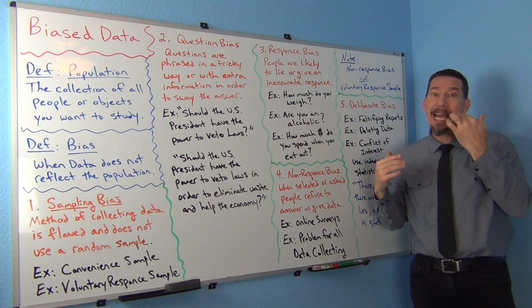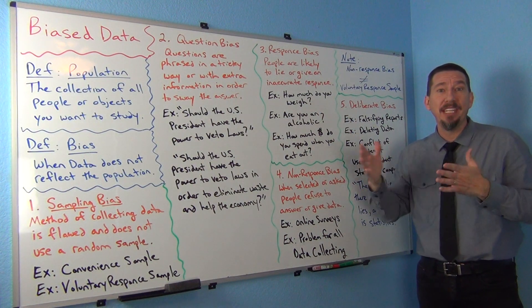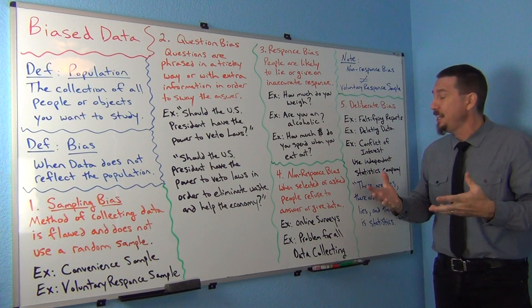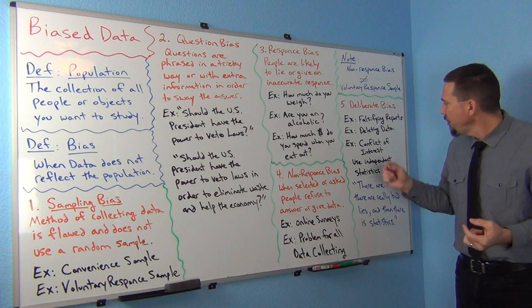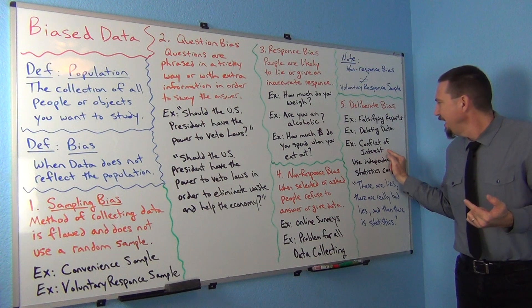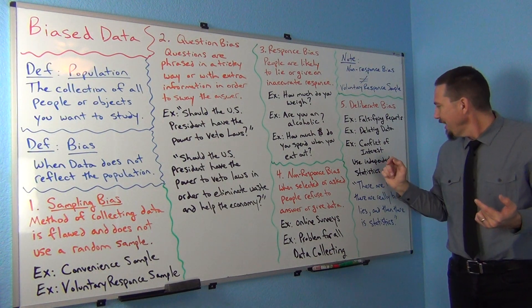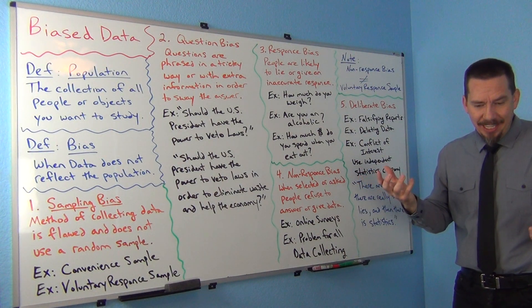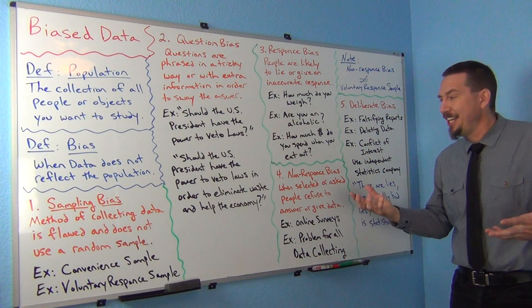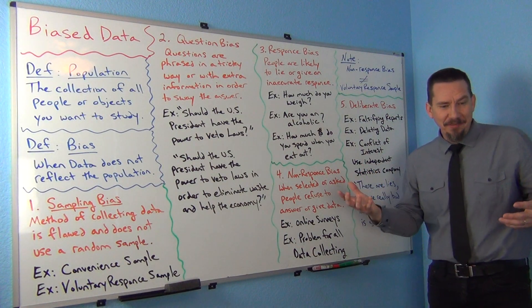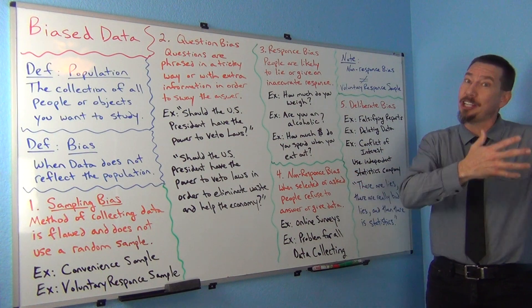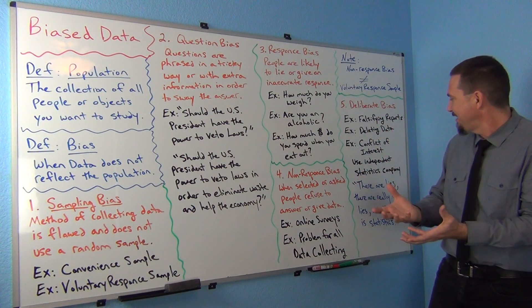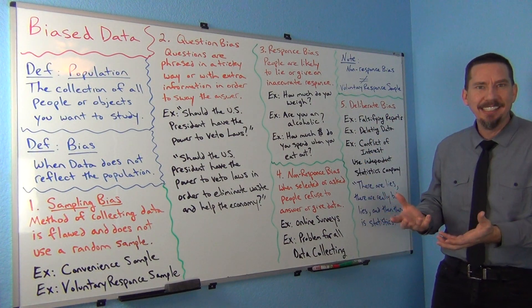People need, businesses need data scientists to work through data and help them make good decisions. But you can have conflict of interest. You probably, you know, you shouldn't have, if you're doing an article about chocolate and maybe the benefits of eating chocolate maybe shouldn't be done by a chocolate company. Maybe you should have an independent statistics company doing that experiment or collecting that data.